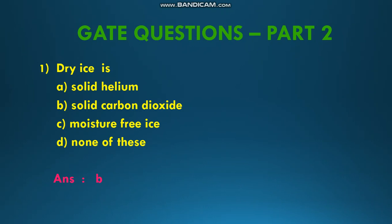Hi everyone, today the topic is GATE questions part 2 in chemical engineering thermodynamics. The first question is: what is dry ice? The options are solid helium, solid carbon dioxide, moisture-free ice, and none of these. Dry ice is nothing but solid carbon dioxide, so solid CO₂ is called dry ice. The answer is B.